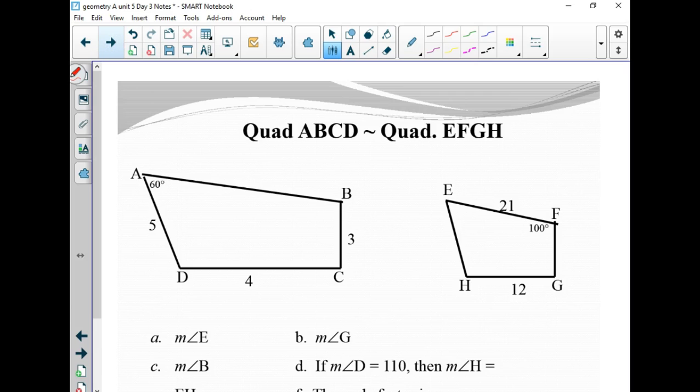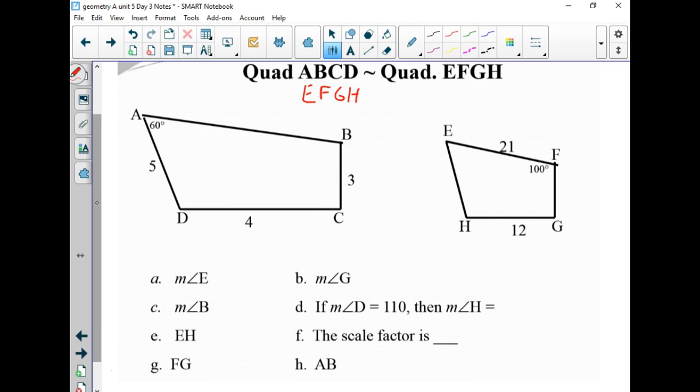And our last bit of notes. ABCDEFGH. So the measure of angle E. And again, if you want to remind yourself, you know, A, E, D, H, and so forth, you can. So measure of angle E corresponds to angle A. This has to be 60. Measure of angle G. Well there's not really enough information given here. So let's just say, since we don't like to assume, I'm going to throw a right angle in there. And since C corresponds to G, G is going to be 90 degrees. Angle B corresponds to F, so that's going to be 100 degrees. If angle D is 110, then angle H will also be 110 degrees.